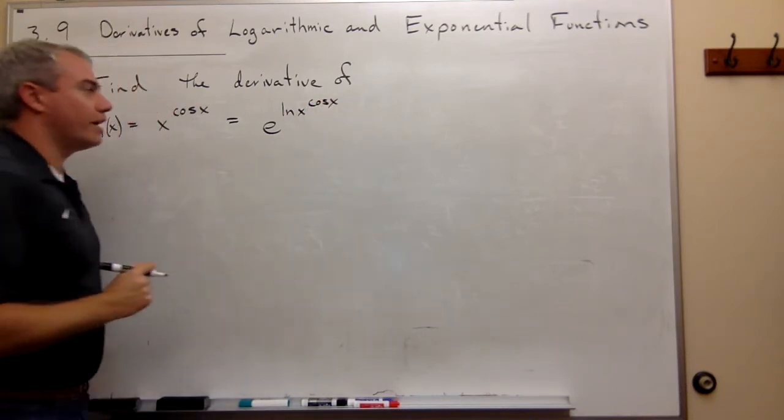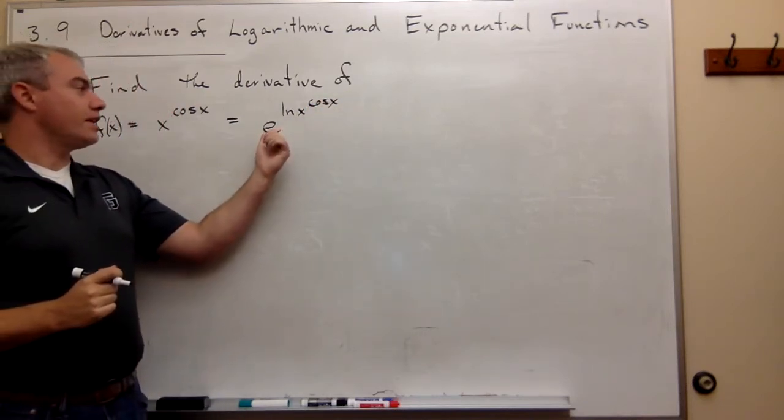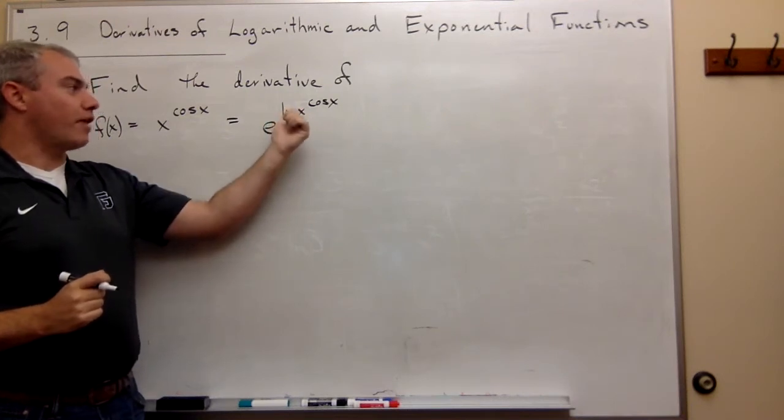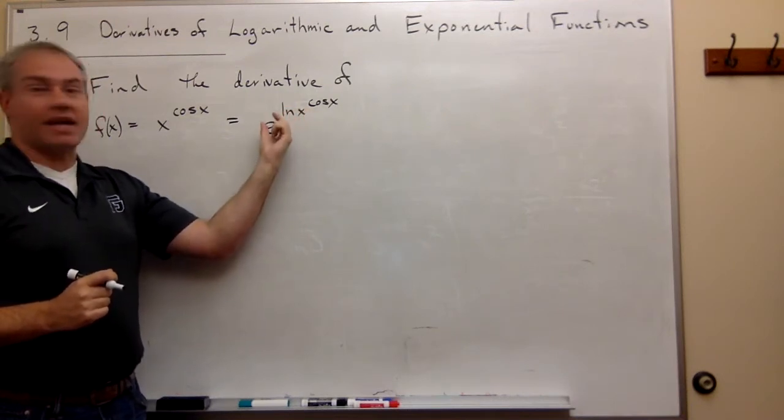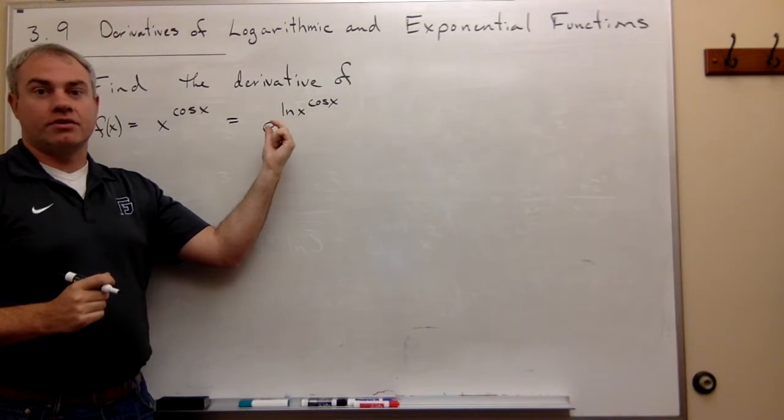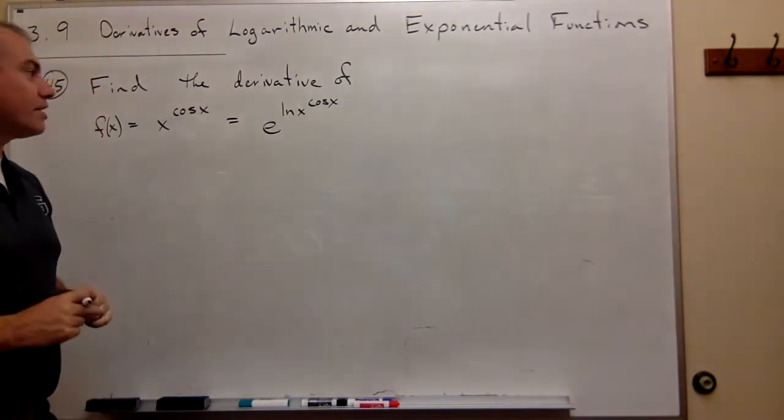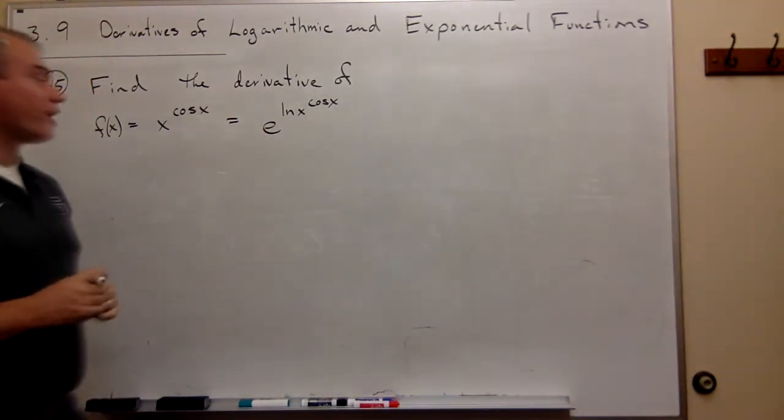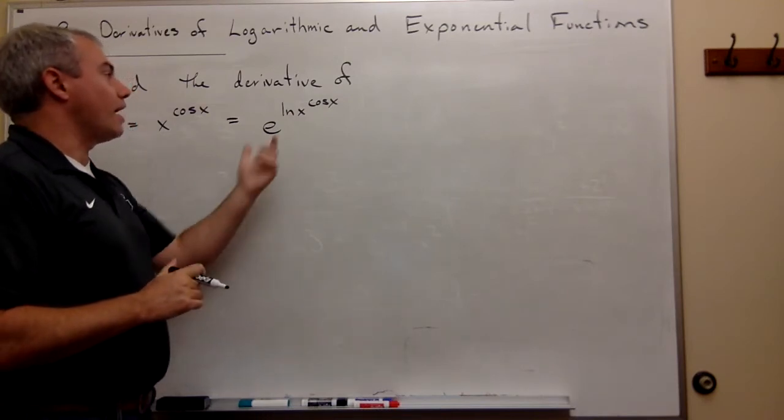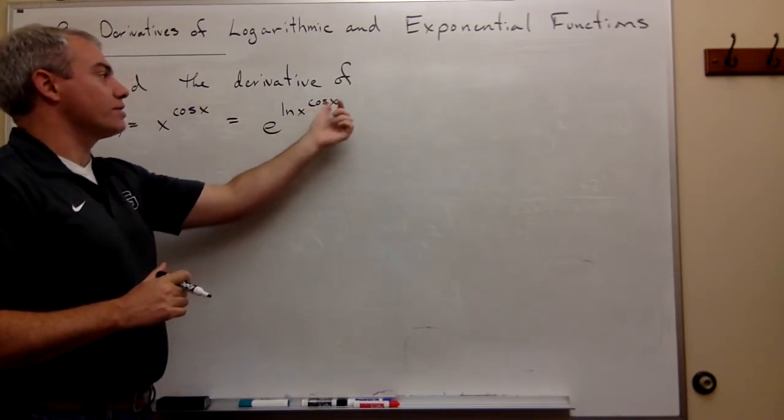Now notice what I did here is I wrote that e raised to the power ln of something, those cancel each other out, all right? And since they cancel each other out, I would just be left with x cosine x.